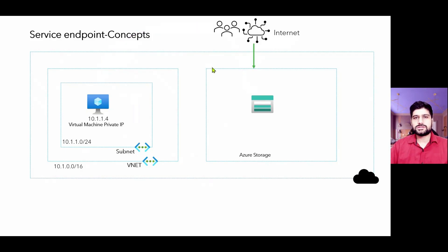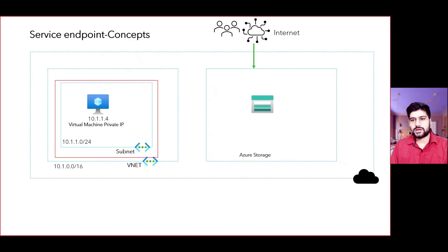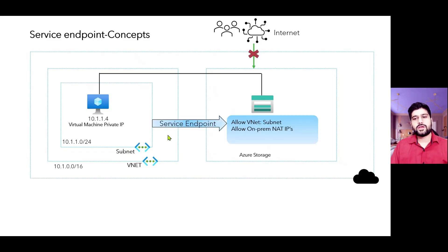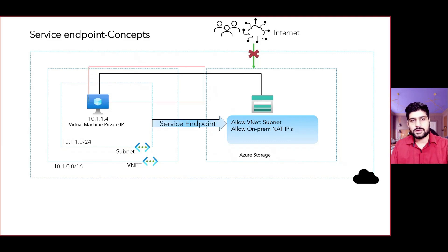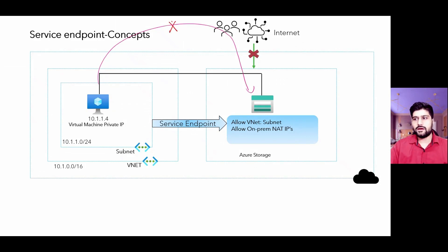If you have internet users, they are also able to connect to the storage account via its public IP. But since this Azure VM and this storage account are both part of Azure, why not have a service that connects this VM to the storage account over the Microsoft backbone? In order to accomplish this, we have a service in Azure called a service endpoint. This creates a connection from the VM to the storage account over the Microsoft backbone, so you're not traversing over the internet.